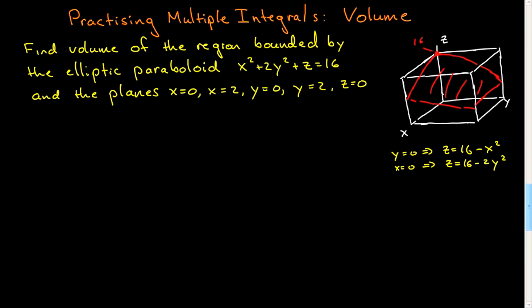So the volume in question is what's under that curve, because it's between z equals zero and this paraboloid. So that'll be between the plane z equals zero and the red surface, and bounded by these other planes. So that's the volume I want to compute.